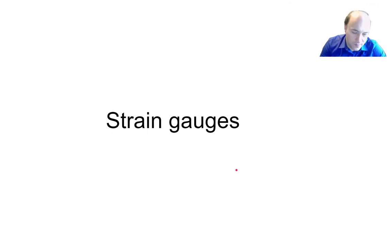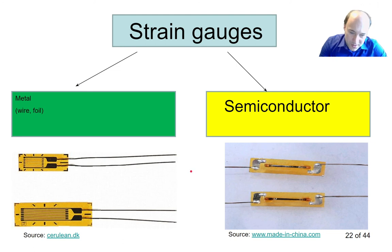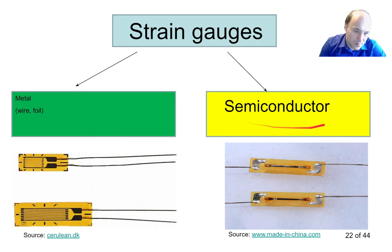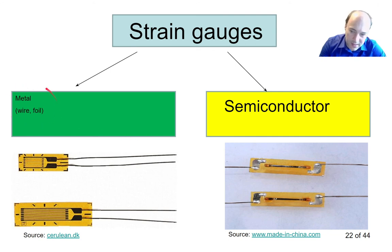That's all for temperature sensors. In the remaining time — about 15 minutes — I'll talk about strain gauges, another very important type of sensor for mechanical engineers. I'll cover only metal strain gauges, not optical fibers or other strain measurement methods. There are basically two types of strain gauges: semiconductor strain gauges and metal strain gauges. I'll be talking only about metallic strain gauges.